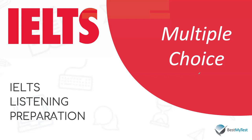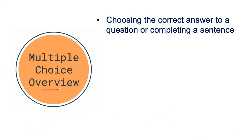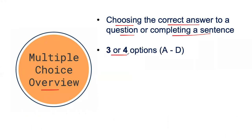Let's look at some common characteristics and features of the multiple choice question type. I'm going to explain some common features of the question so that we are prepared for our example. First off, you are going to have to choose between the correct answer to a question or complete a sentence. You're probably familiar with the multiple choice question type in that you are given around three to four options as a response to a question.